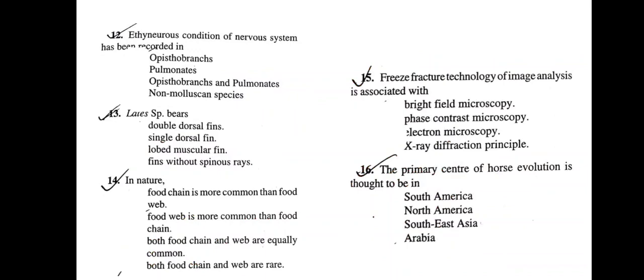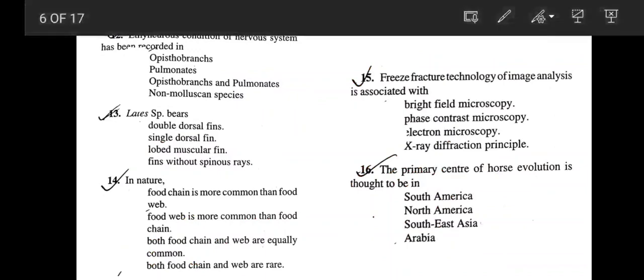In nature, which is more common — food chain or food web? The correct answer is option B: food web is more common than food chain. In nature, organisms of different trophic levels interact with each other, which depicts the food web. Actually, food chain is very limited in nature — we read food chain for simplification, but food web is much more prevalent.